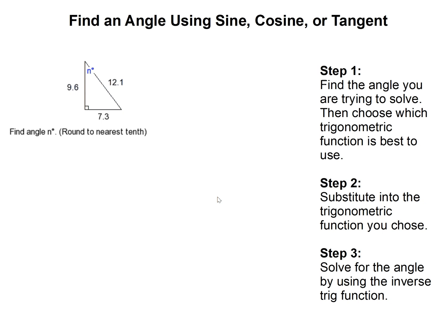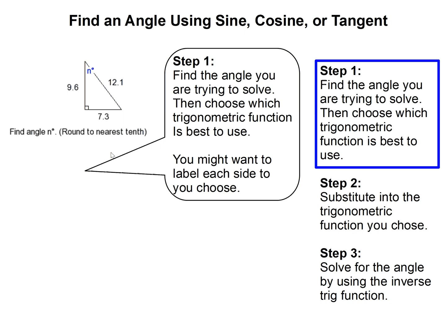Find an angle using sine, cosine, or tangent. The first thing we need to do is find the angle you're trying to solve for, then choose which trigonometric function is best to use. Sometimes you can use multiple ones.